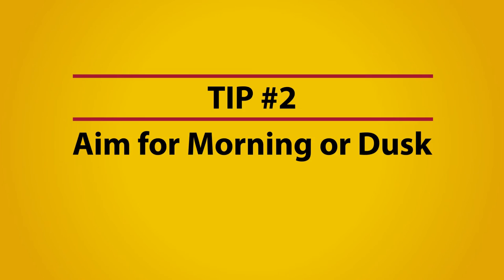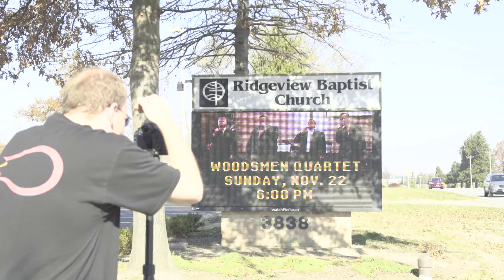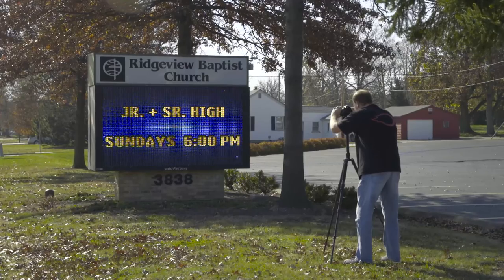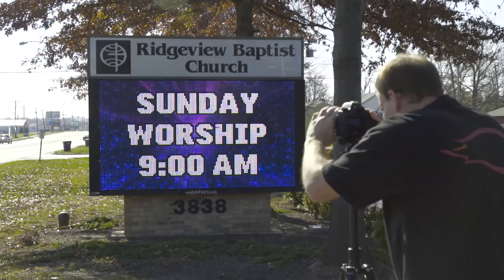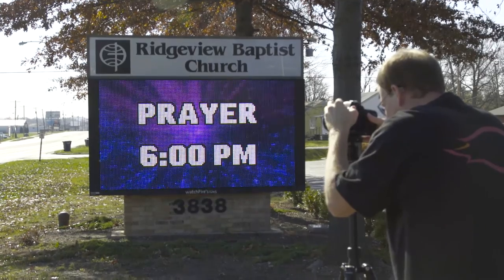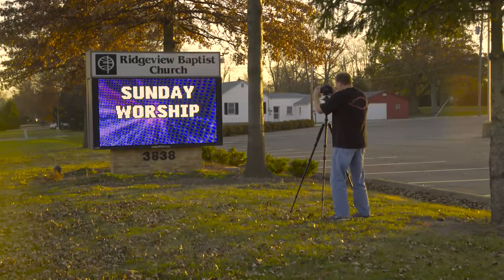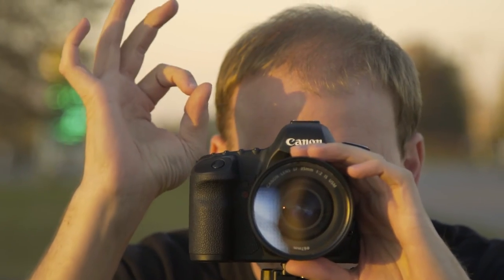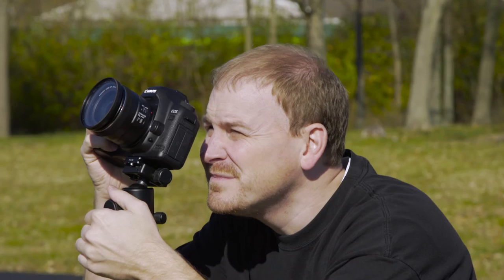Tip number two: try to avoid taking your photos in bright overhead sunlight. Early afternoon on a bright, sunny day is usually the worst time to take pictures of an LED sign. If you must shoot during the day, try photographing the shadow side of the structure — this will usually make the LED sign look its best. Try to aim for morning or dusk because the lighting will make the entire structure look really nice. Just avoid aiming your camera directly into the sun if possible.